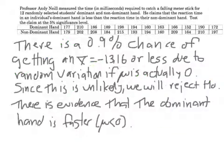Then we just sum it up with our step four of the inference toolbox, the paragraph. There is a 0.9% chance of getting an x-bar of negative 13.16 or less due to random variation if mu is actually zero. Since this is unlikely, we will reject the null hypothesis. There is evidence that the dominant hand is faster, or in other words, there is evidence that mu is less than zero. Exactly what we've done before. Just the one little difference is you have to do that little trick with L3. And that really wraps up section 12.1.